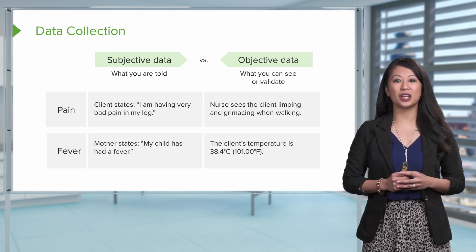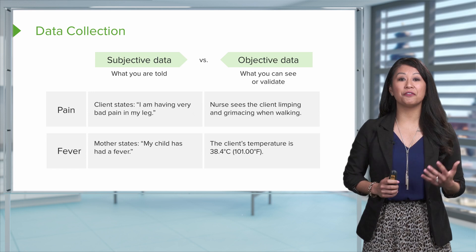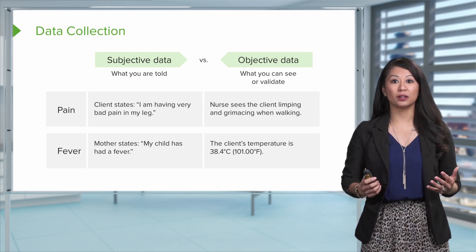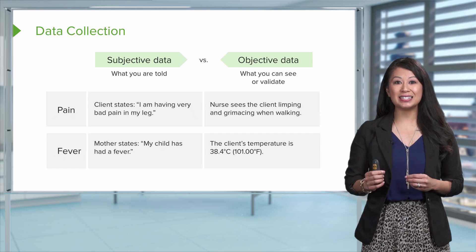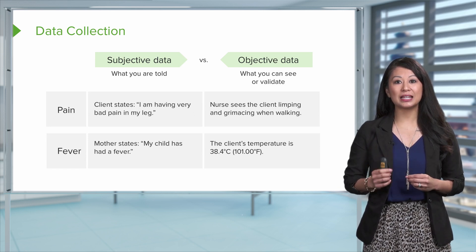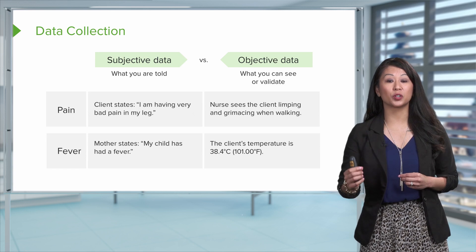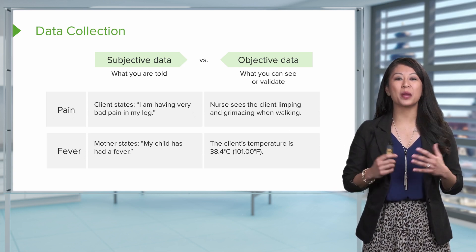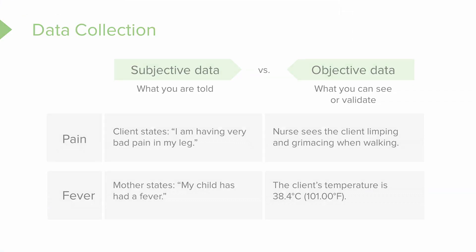Here's another example, such as my client has a fever. So I can't see that my patient has a fever, but objectively, I can take a temperature, and the client's temperature is 101.0 degrees Fahrenheit. I can tangibly and objectively see that my patient is running a fever. So just know, as a nursing student, it's important that you distinguish, and as a nurse, subjective versus objective data, because this is gonna be important for our documentation.